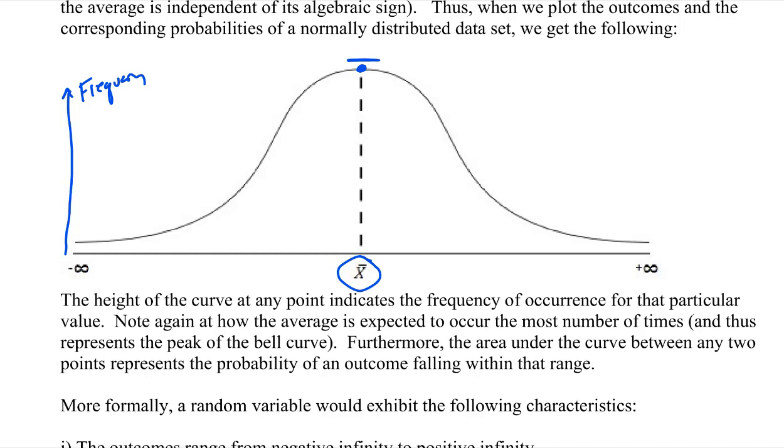But then as you move away from the average, these values would have lower likelihood of occurring. And that's true whether you're looking at to the right of the average or to the left of the average. So let's pick this one here. So what this says is this value is also possible, but it would have a lower probability of occurring than the average.